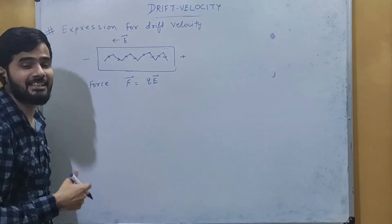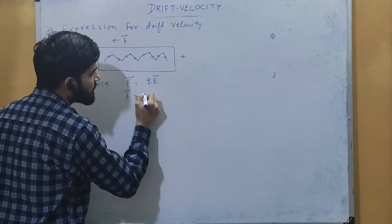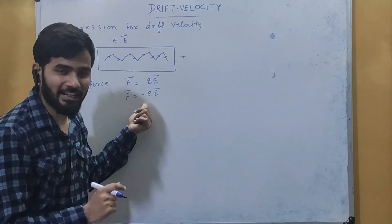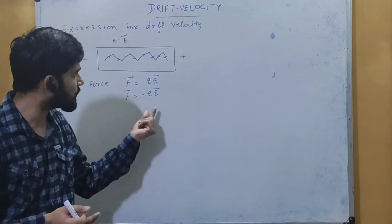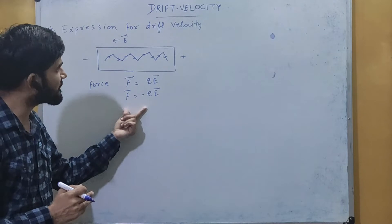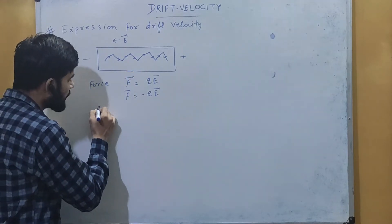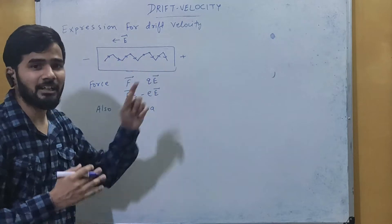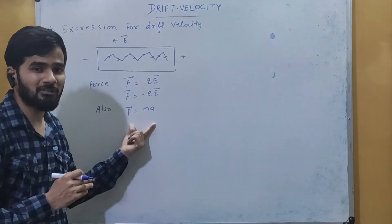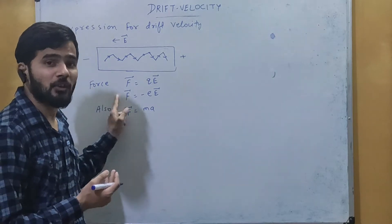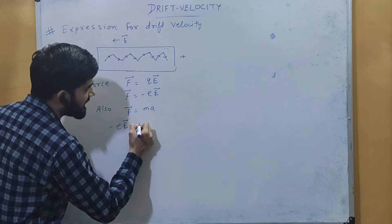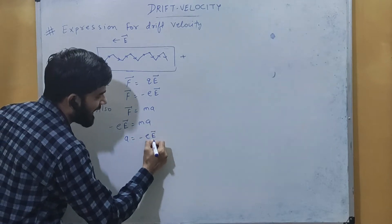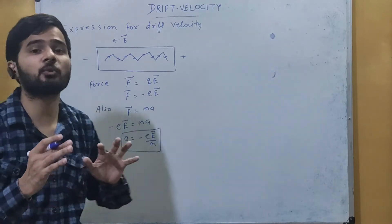Here q is the charge of the electron, so I can write F equals minus e times E — the minus sign because the charge on the electron is negative, represented by e, which equals 1.6 times 10 to the power minus 19 coulombs. I can also write the same force as F equals ma, meaning the electron of mass m is accelerated in the electric field. Since these two forces are equal: minus eE equals ma, and therefore acceleration a equals minus eE divided by m.